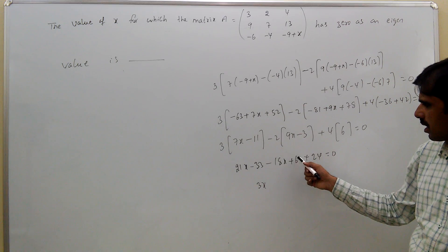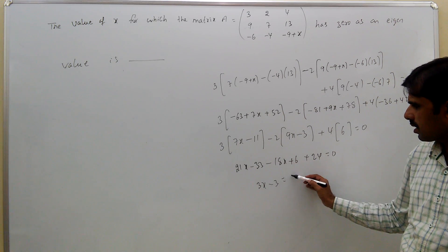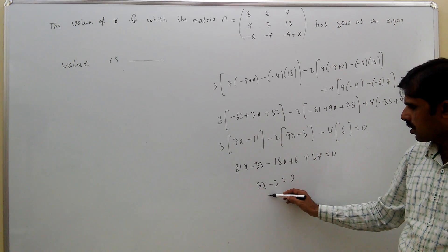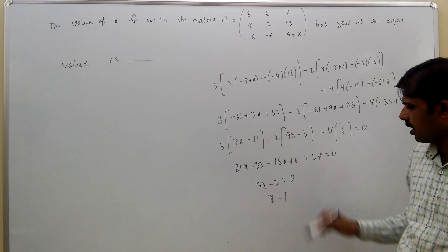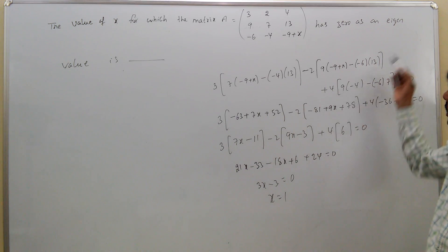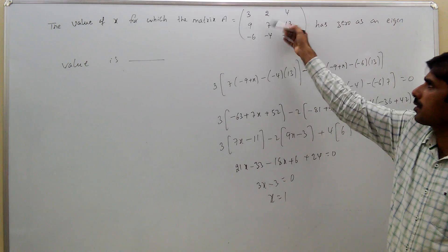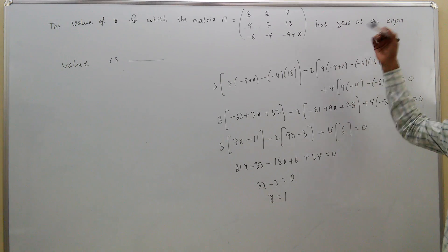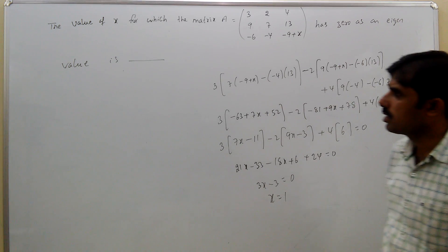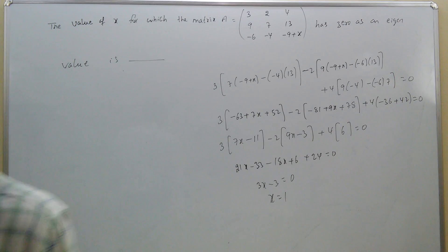Plus 24 equal to 0. So 21X minus 18X is 3X, and 24 plus 6 minus 33 is minus 3. Therefore 3X minus 3 equals 0, so X equals 1. For X equal to 1, the determinant of this matrix is 0, so one of the eigenvalues is 0. The answer is 1.